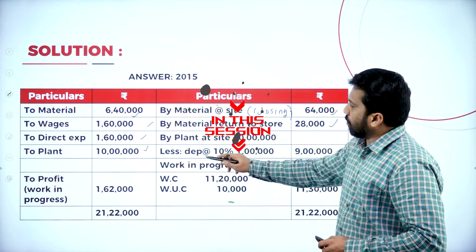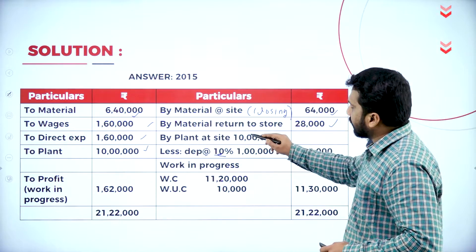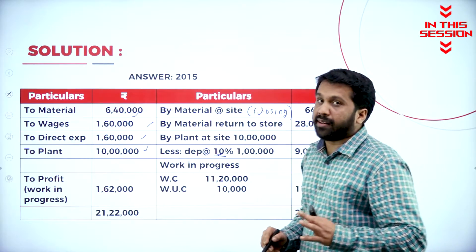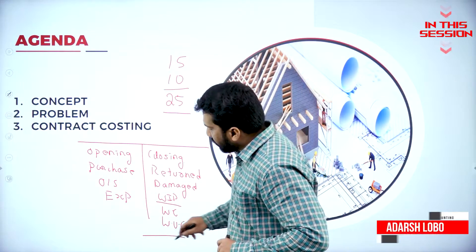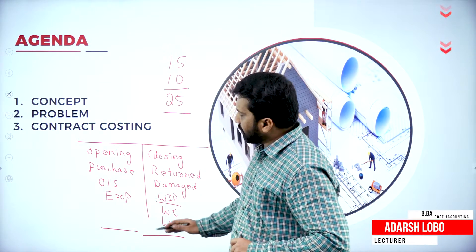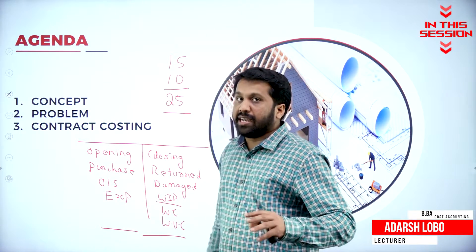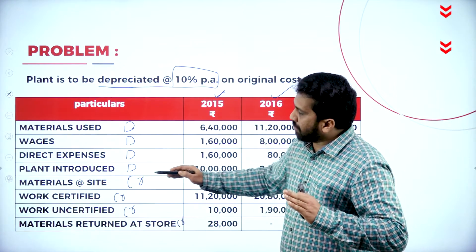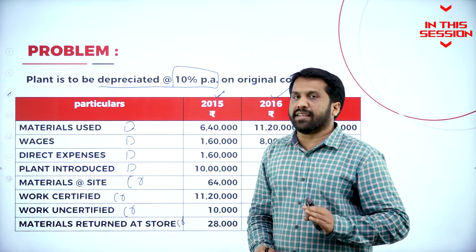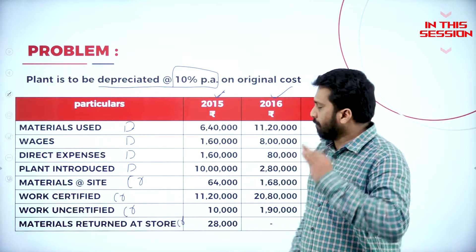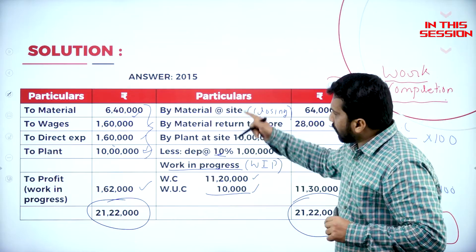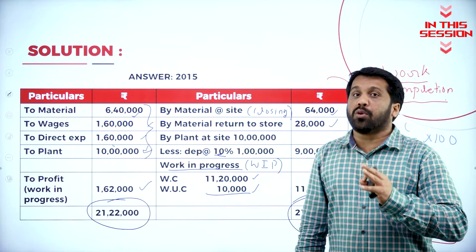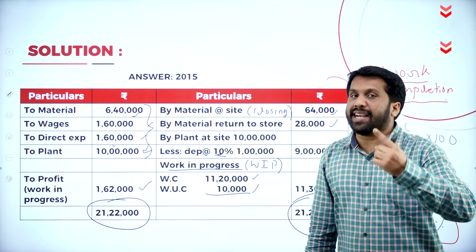Plant value is 10 lakh. What is the depreciation? 10%. So 10 lakh minus 10% gives your answer as 9 lakh. You have to see which side is more. Your debit side is more and your credit side is less — it will be a notional loss. Direct expense, plant materials, material asset — everything we have bifurcated into debit and credit. Whatever is on the credit side will be called the opening balance for next year.